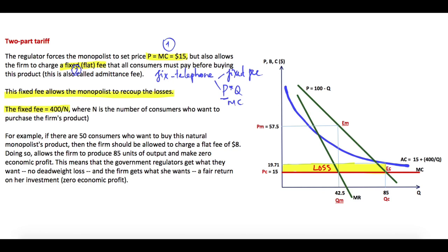losses over the number of consumers. In this case, losses is $400, so it's equal to 400 over N, where N is the number of consumers who want to buy the firm's products. For example, if there are 50 consumers who want to buy this natural monopolist's products, then the firm should be allowed to charge a flat fee of $8. This is equal to $400 total loss over 50, the number of consumers. Doing so